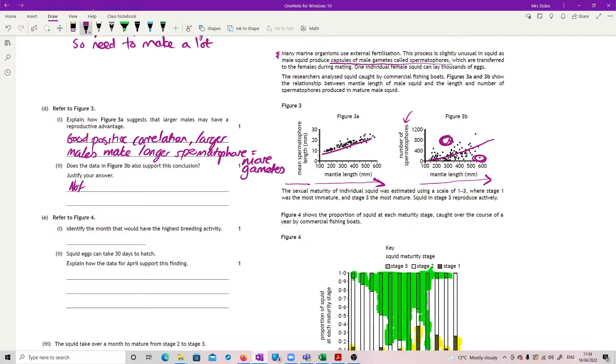So I don't think it fully supports it. So not fully, because, and it says justify, so if you say no and then don't justify, no mark. If you say yes and don't justify, no mark. So not fully.